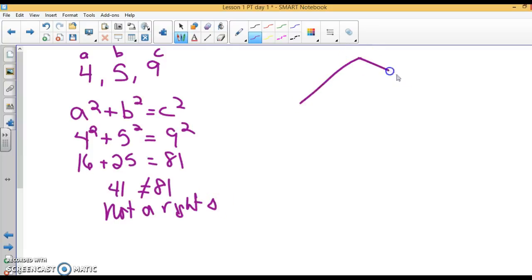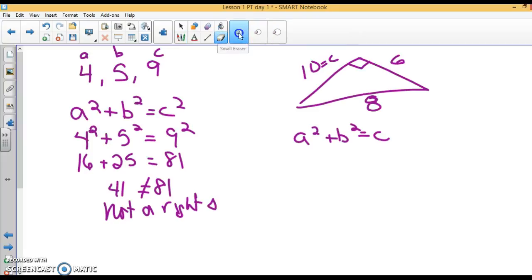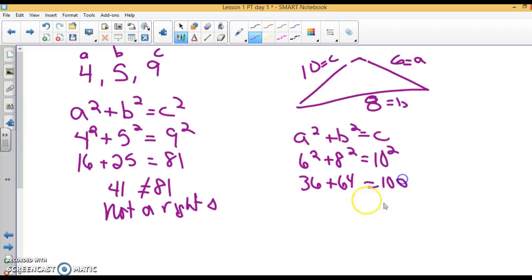Let's check this out. 10, 6, and 8. They want us to know if it's a right triangle. So A squared plus B squared equals C squared. This will have to be C. Why does 10 have to be C? Because it's the longest. I'm going to call this A and this B. So 6 squared plus 8 squared equals 10 squared. 36 plus 64 equals 100. 36 plus 64 is 100. So is this a right triangle? Yes, a right triangle.